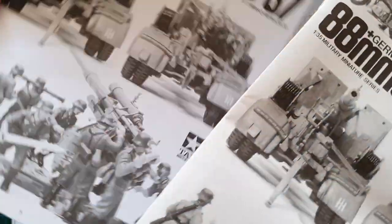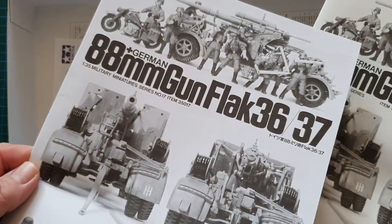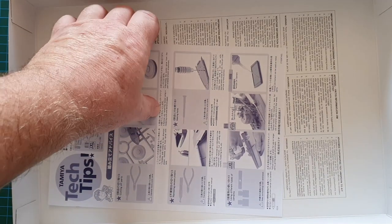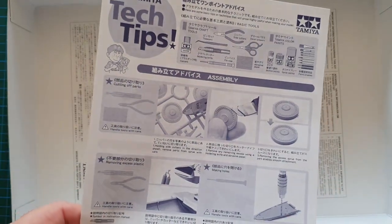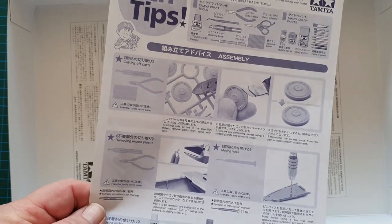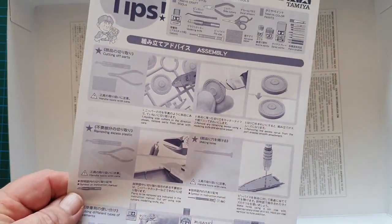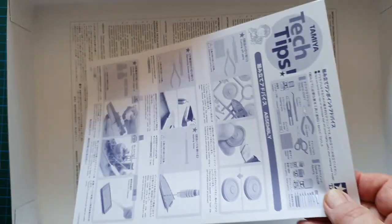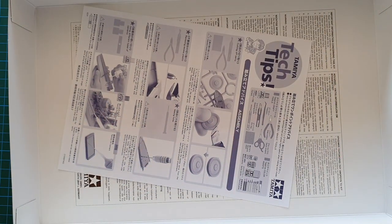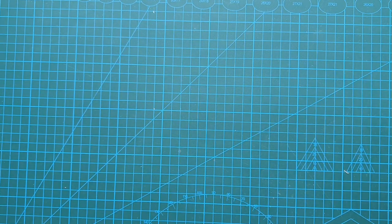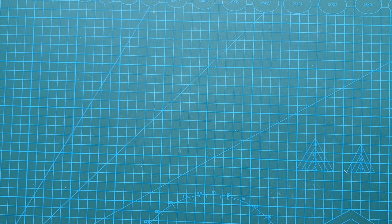Two sets of instructions, one Japanese, one in English. We'll have a look at those shortly. And the usual modern inclusion of how to drill holes, how to cut things off, etc. So as you can tell this is definitely an ongoing issue by Tamiya and is always available.